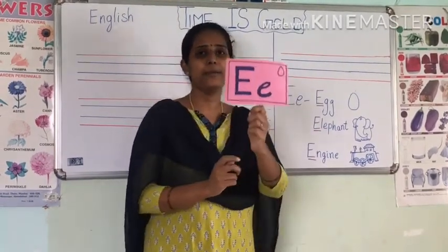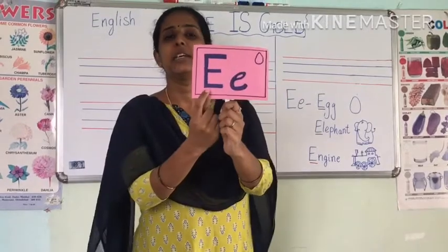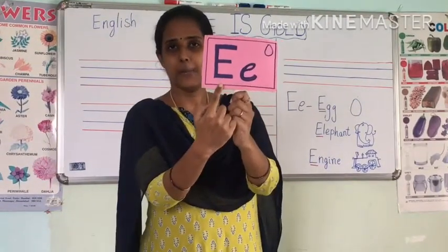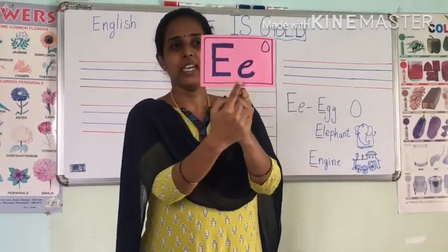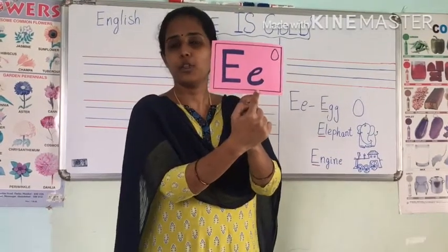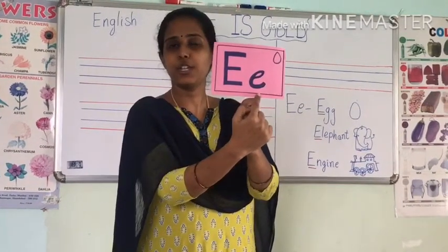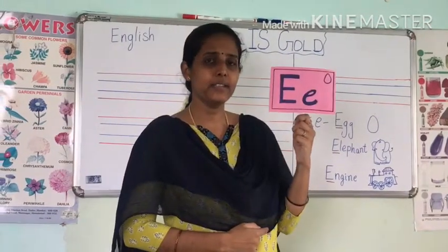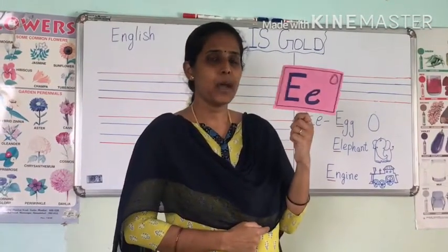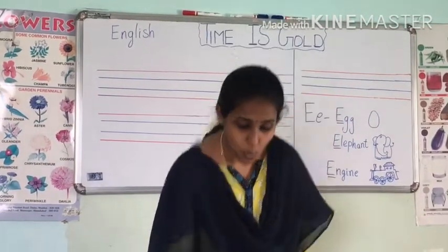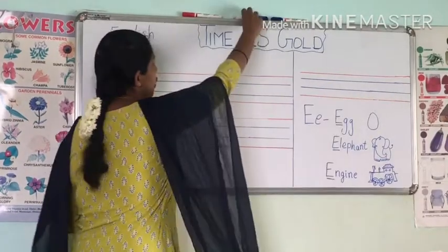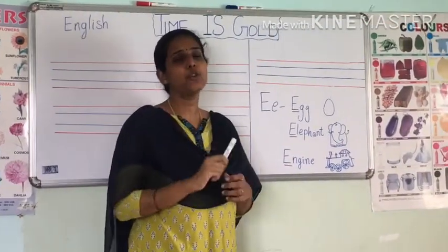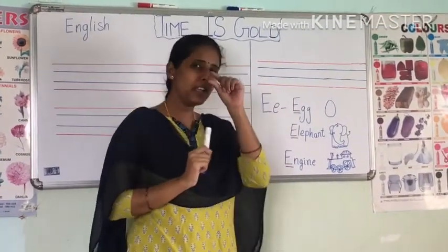Can you all see kids? This is capital E and this is small e. Capital E, small e. Understood everybody? Very good. Before we write E, let us recall the letters we saw before. What are the letters we saw before? A, B, C and D.